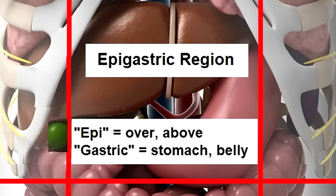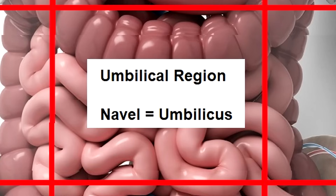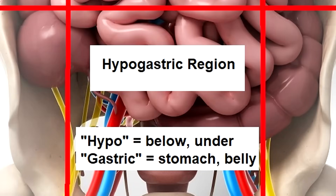Now let's look at the abdominal regions in the center column. Unlike the regions on the side, these center column regions are named after their location relative to the stomach, not the bones. First, we have the epigastric region. The prefix epi means above or over, and gastric means stomach or belly, so this is the region over and above the belly. Next, we have the umbilical region, which is easy to remember because this contains your navel, also called the umbilicus. Finally, we have the hypogastric region — hypo means below or under, and gastric refers to the stomach or belly — so the hypogastric region is below the belly.